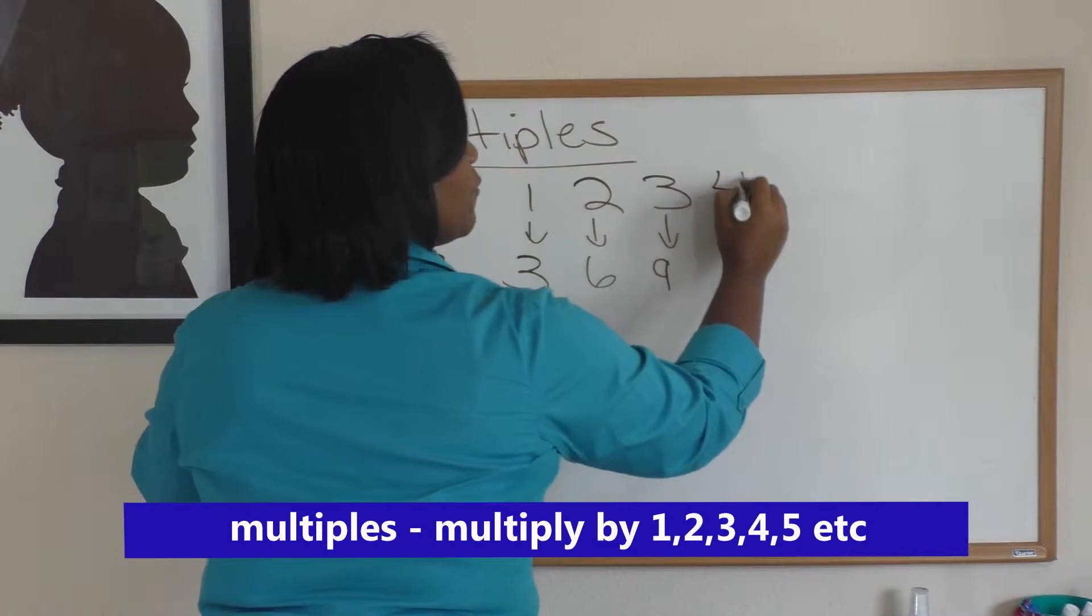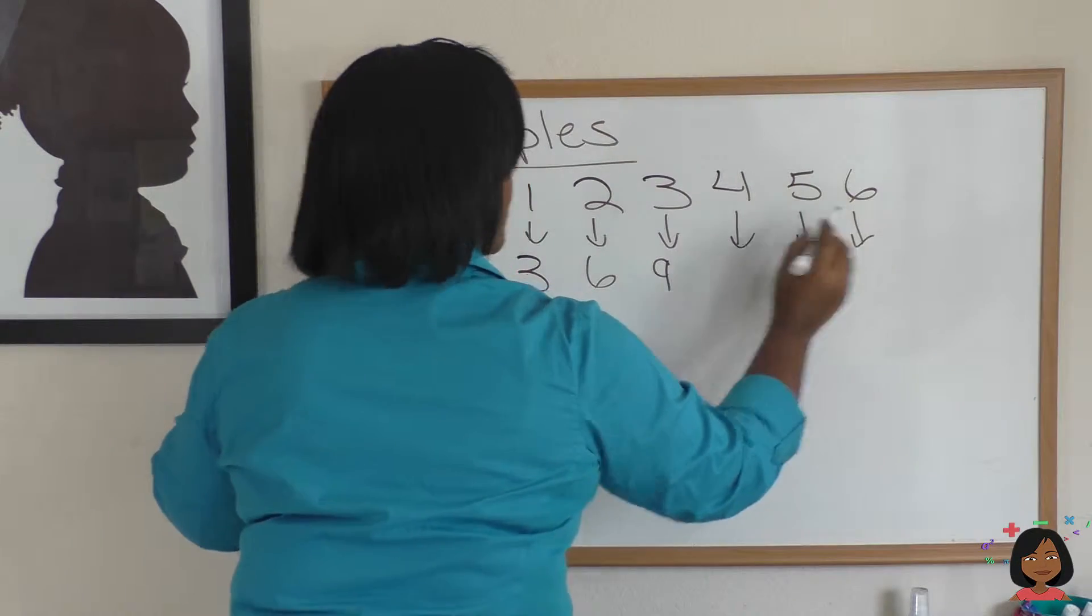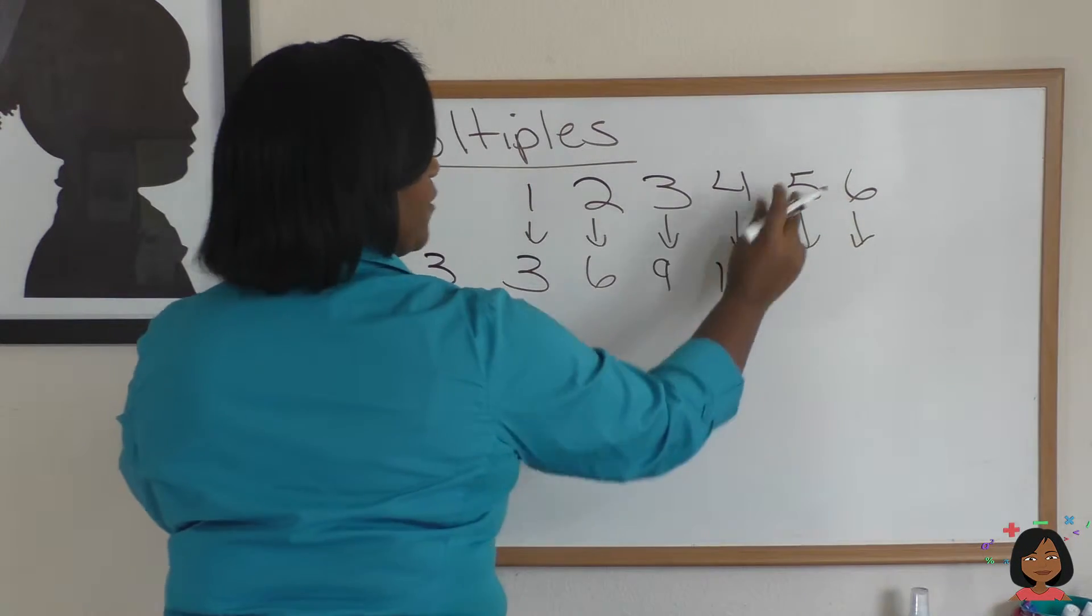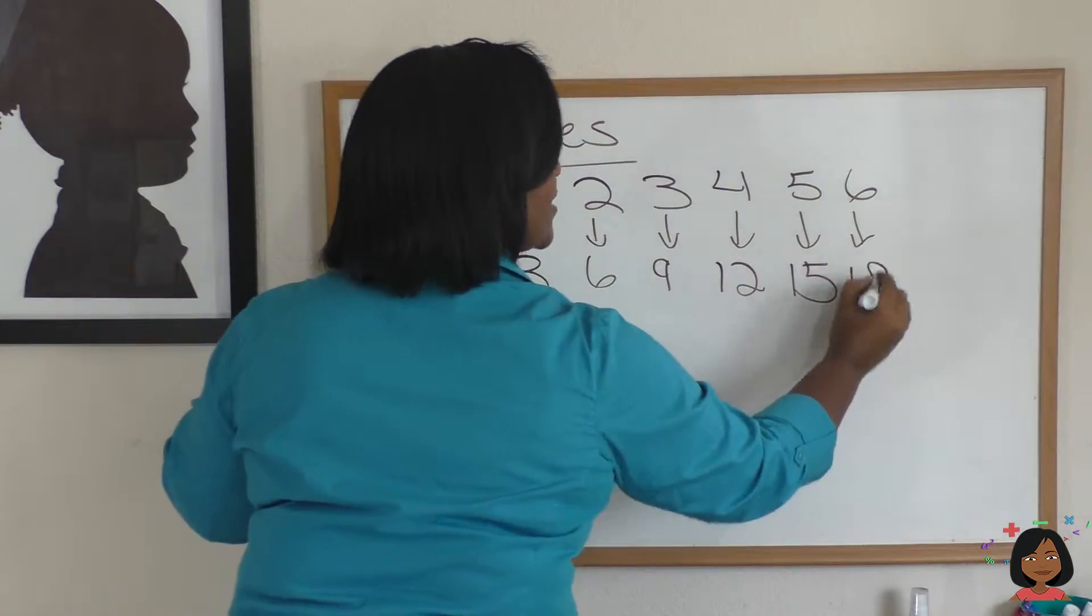Let's do a few more. Four, five, and six. Four times three is 12, five times three is 15, six times three is 18.